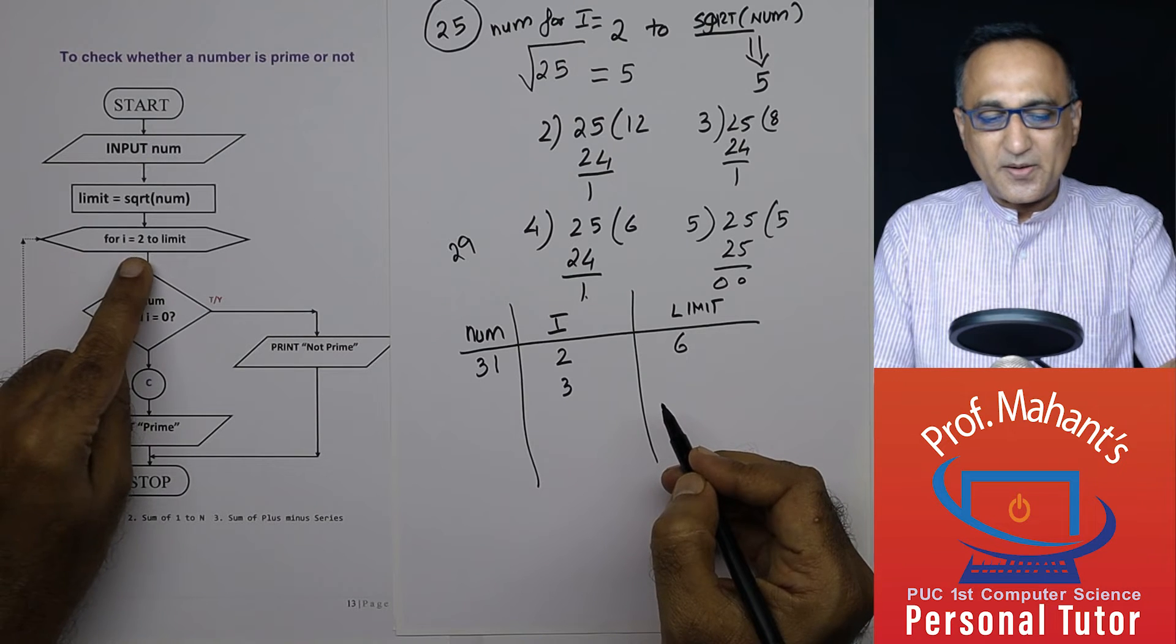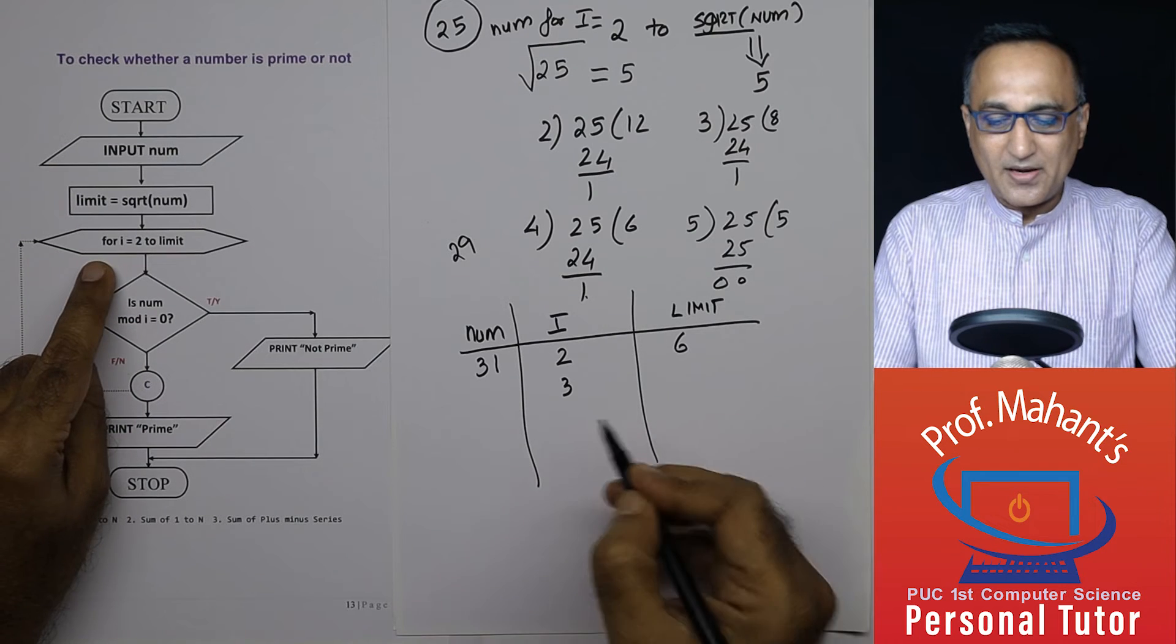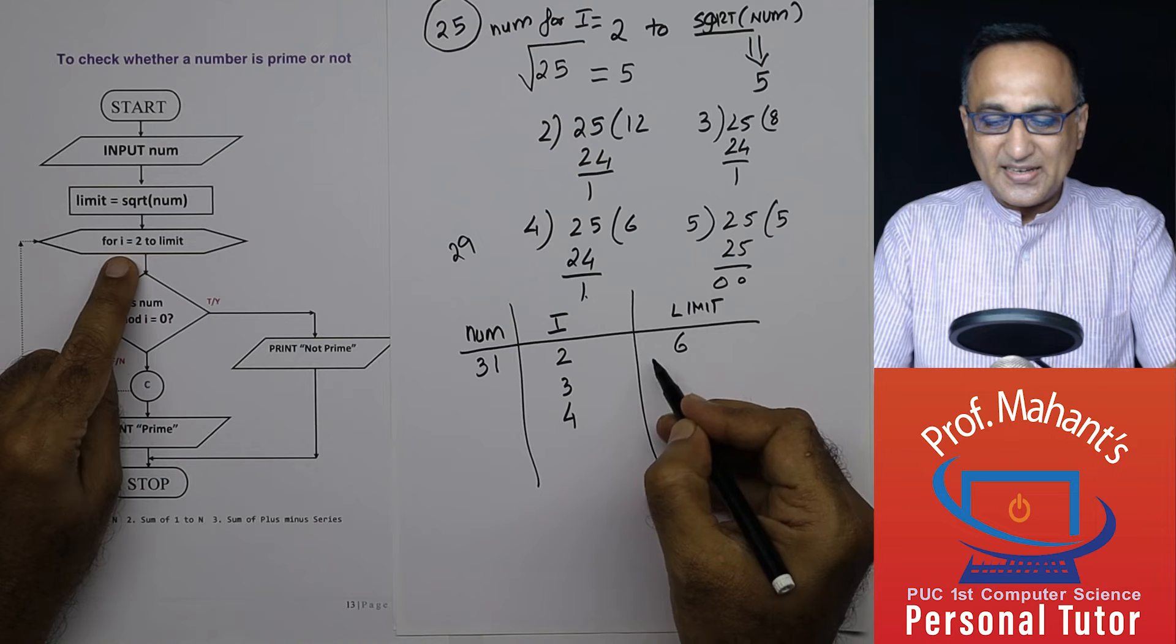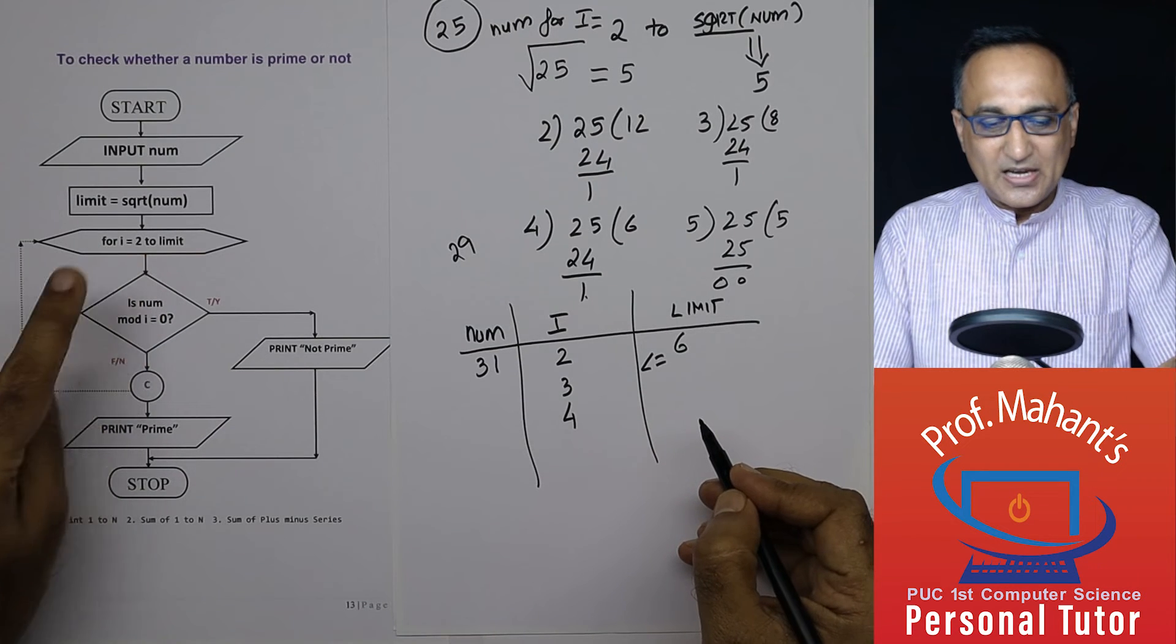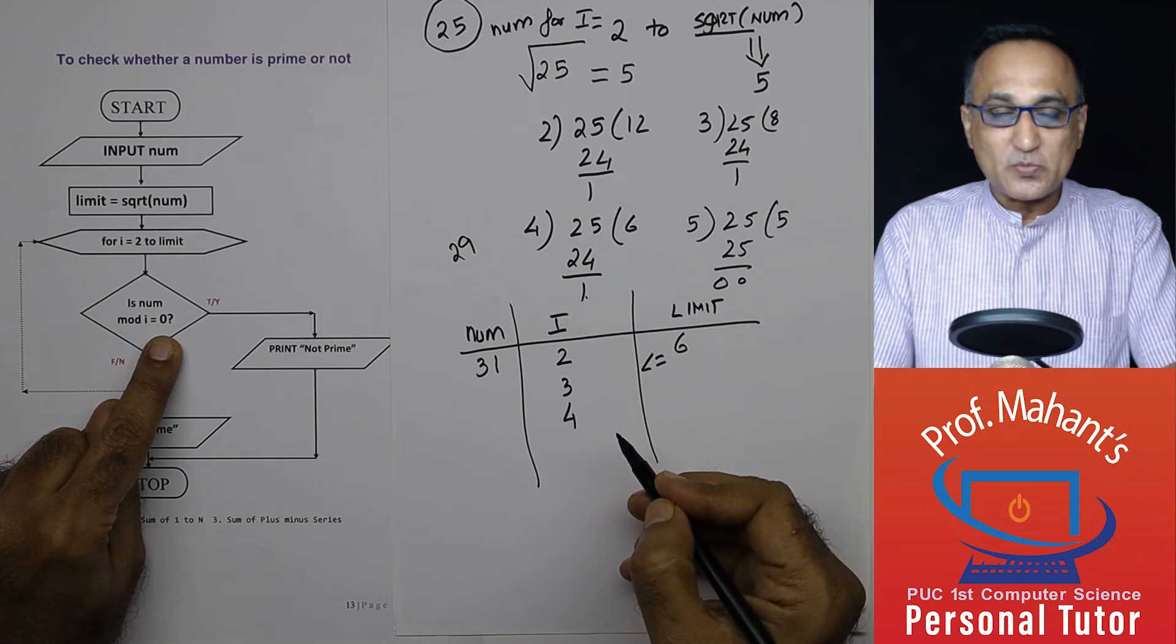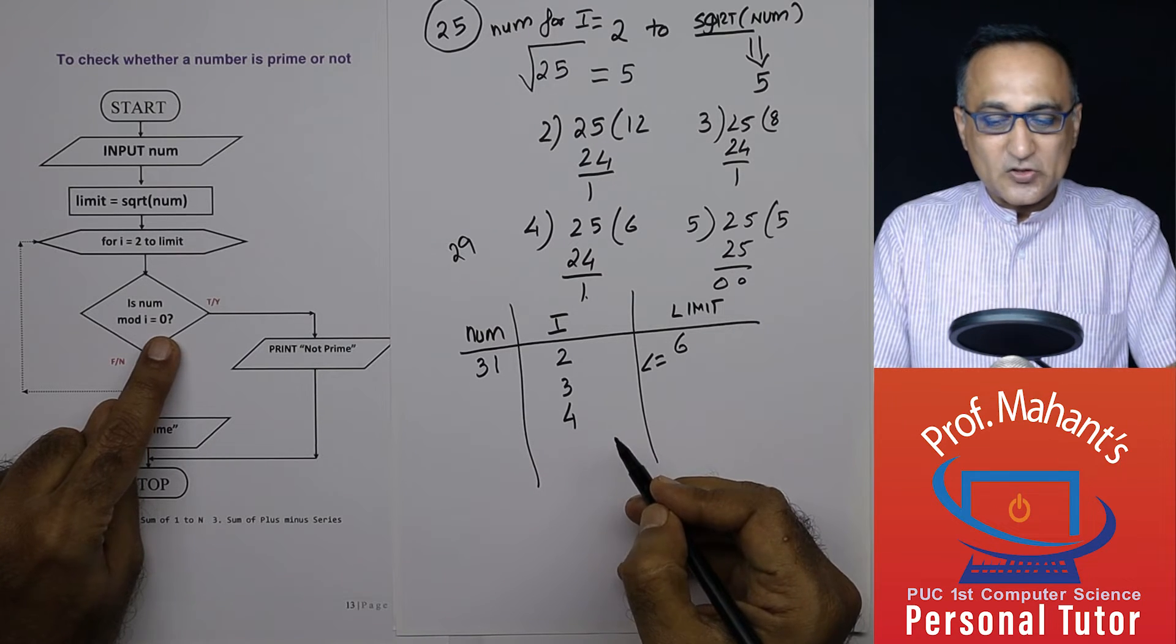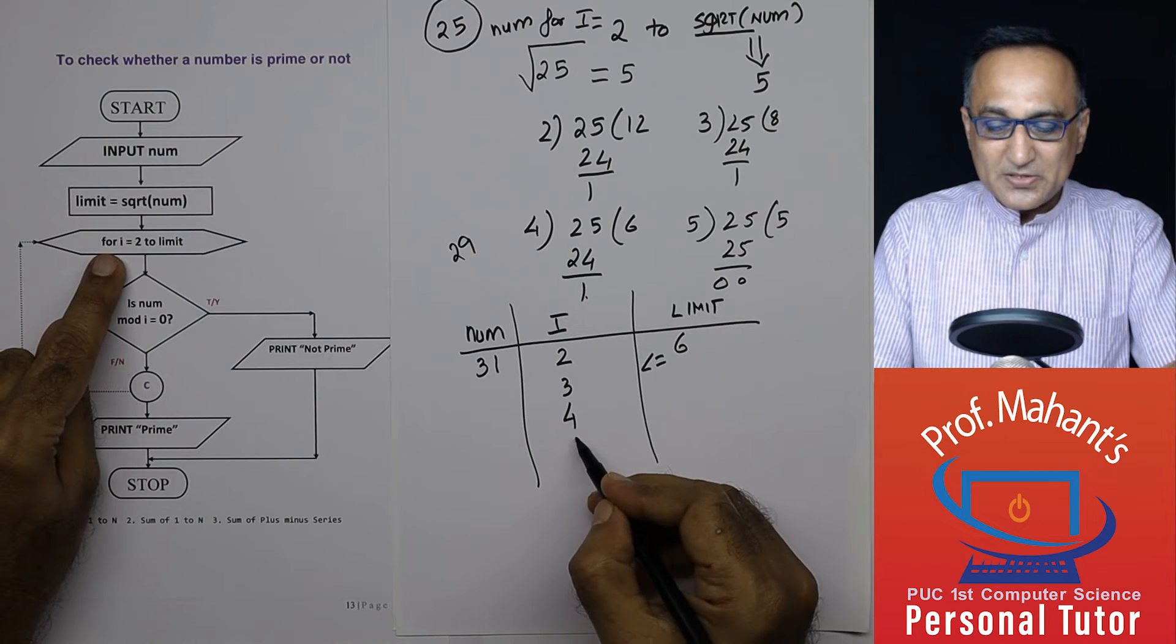31 divided by 3 again here. Remainder is 1. I go back here. i becomes 4. So 4 is still less than or equal to the limit which happens to be 6. 31 divided by 4, is the remainder 0? No. It is the remainder happens to be 3 because 7 into 4 is 28. So remainder is 3. Now i is again increased. i becomes 5.